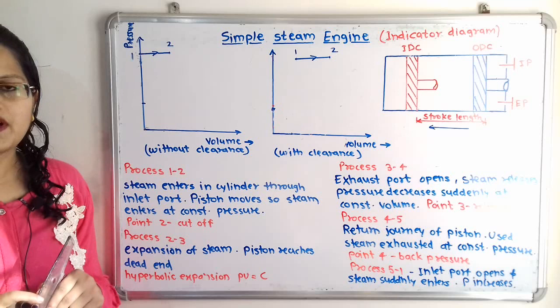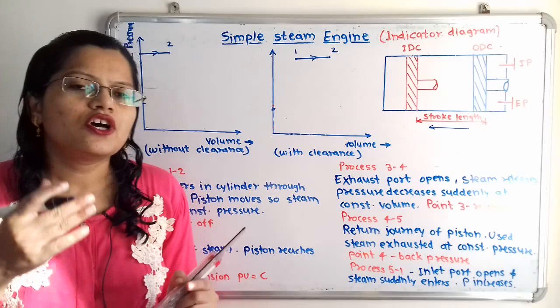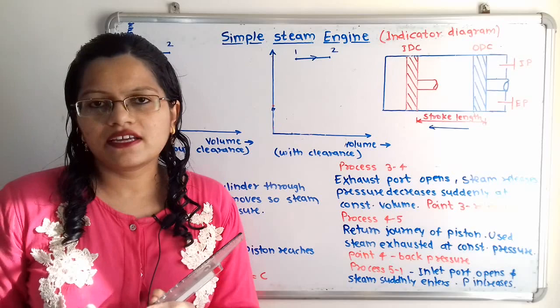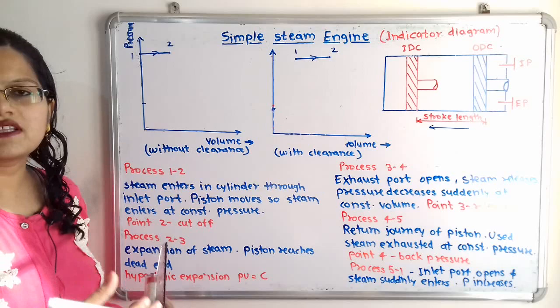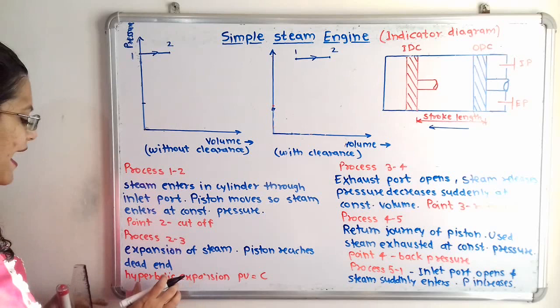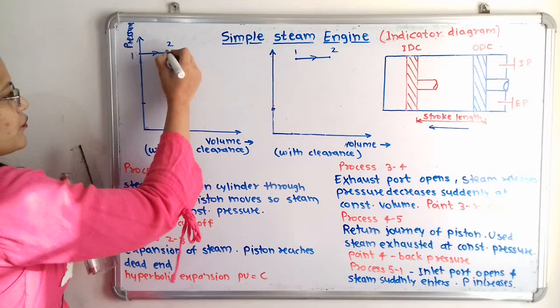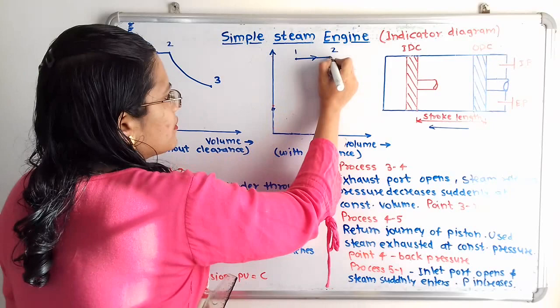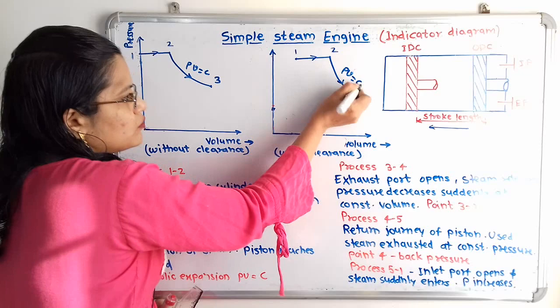Next is process 2 to 3 — the expansion process. Pressure decreases and volume increases as the piston reaches the inner dead center. This expansion follows the hyperbolic law: PV equals constant. We show this curve from point 2 to point 3 on both diagrams, labeling it PV = C.